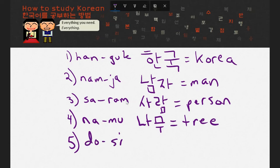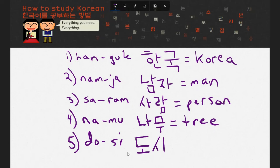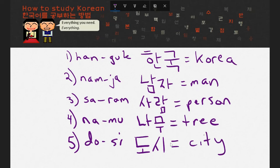The fifth word I would like you to try is Do-shi. As an English speaker you might be looking at this and thinking that this says 'do see,' however whenever the S letter in Korean is followed by the I letter in Korean, the S letter actually makes a SH sound, so this word would actually say Do-shi. I'll give you 10 seconds, and you can start now. Okay, the first syllable Do would look like this, and the Shi would look like this. This would read Do-shi, and this translates to city. Well, so that was fun — I hope you learned a lot.